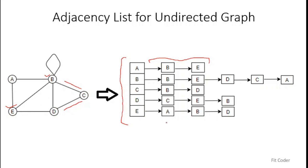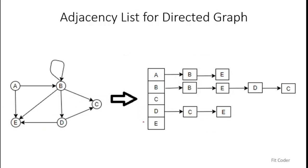One important point to note is that the elements in each adjacency list need not be ordered. So instead of A, B, D we could also have D, B, A or B, A, D — it does not matter. These elements are unordered.